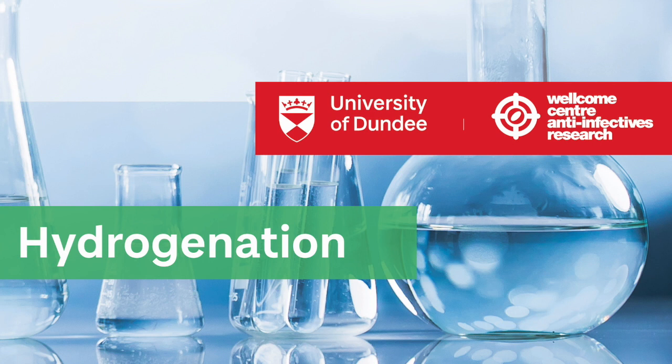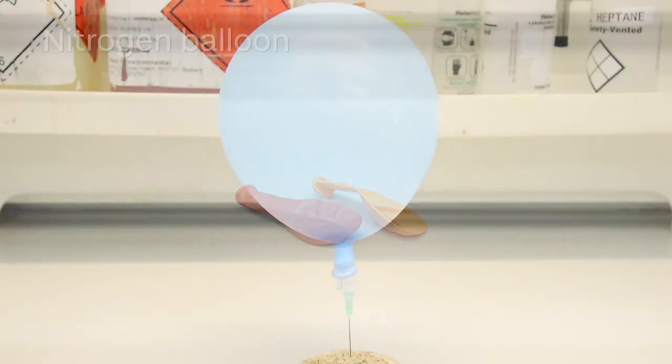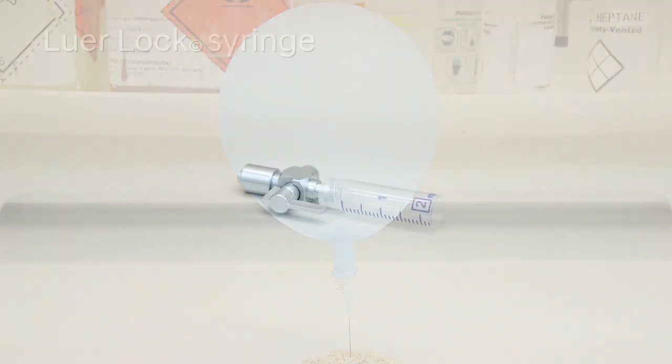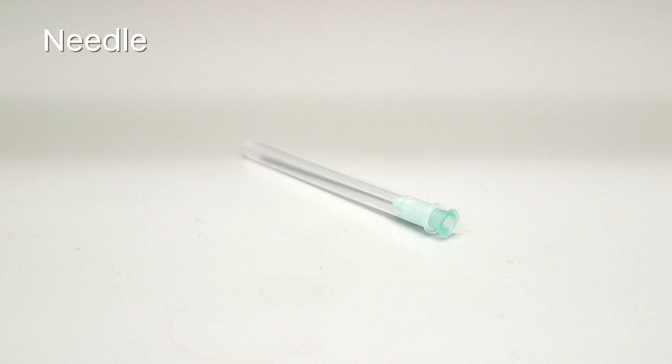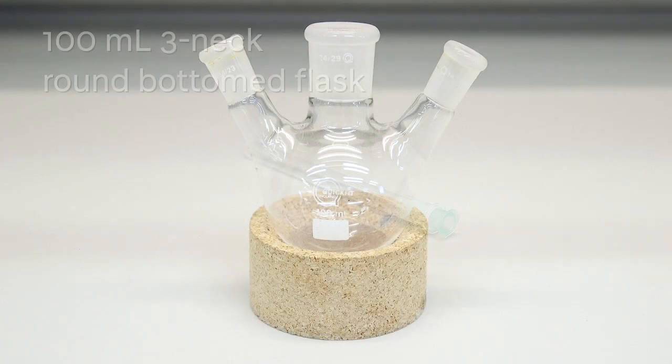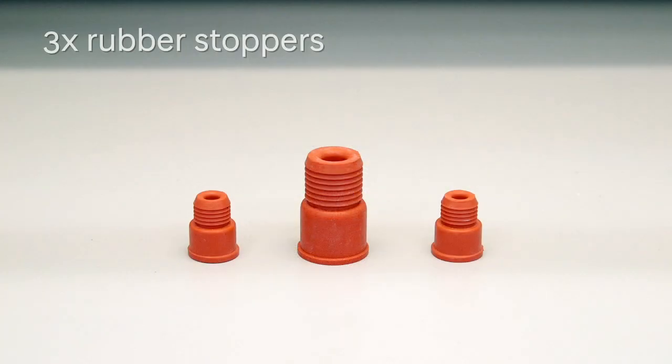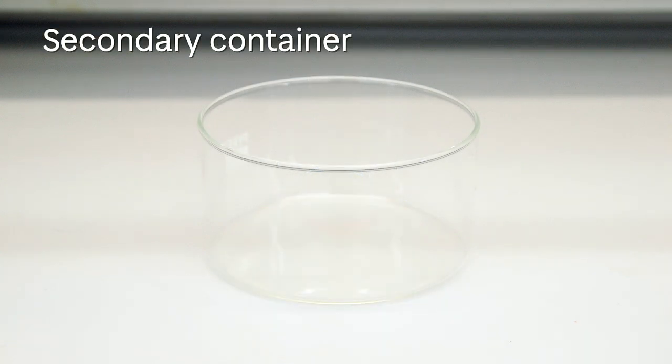For this reaction you will need two balloons for the hydrogen gas, one pre-filled balloon of nitrogen gas, a lure lock syringe, a needle, a 100 ml three neck round bottom flask, three rubber stoppers, a 100 ml single neck round bottom flask, and a secondary container.